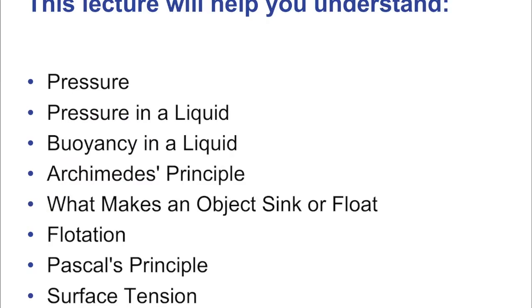We'll cover what it means to have pressure in a liquid, and a big topic: buoyancy. Buoyancy directly leads to the idea of Archimedes' principle, and that's what makes objects sink and float. How a boat can float, for example, is of course due to buoyancy — and specifically the idea of flotation, creating flotation through certain shapes.